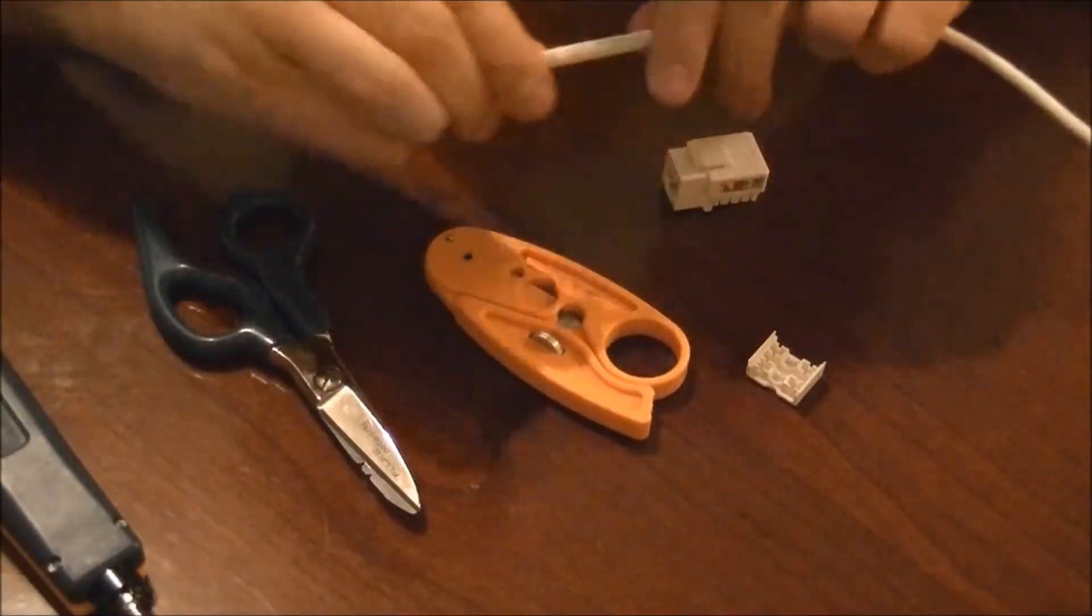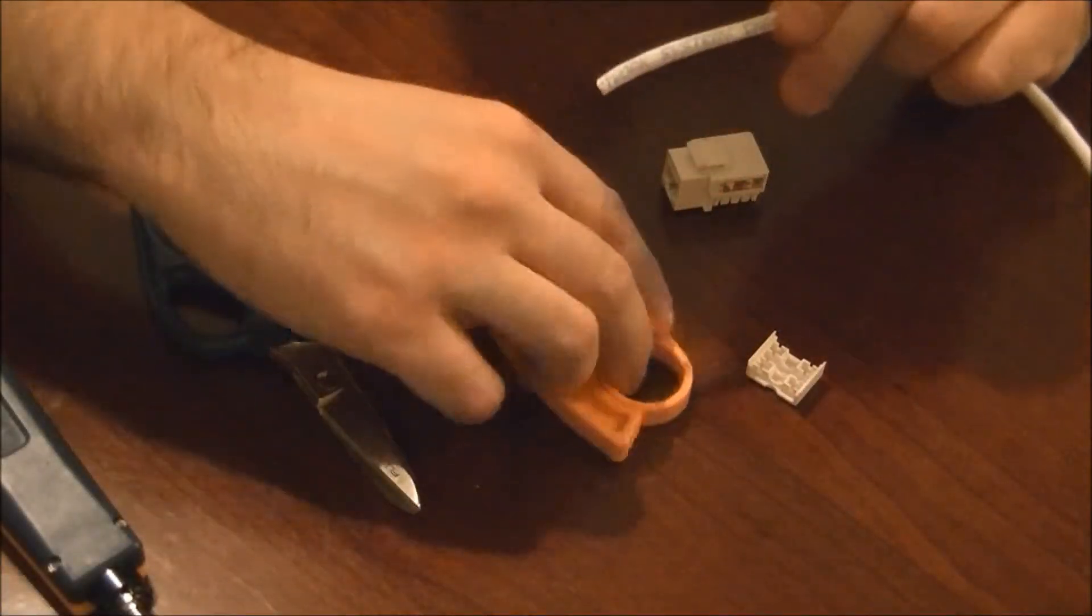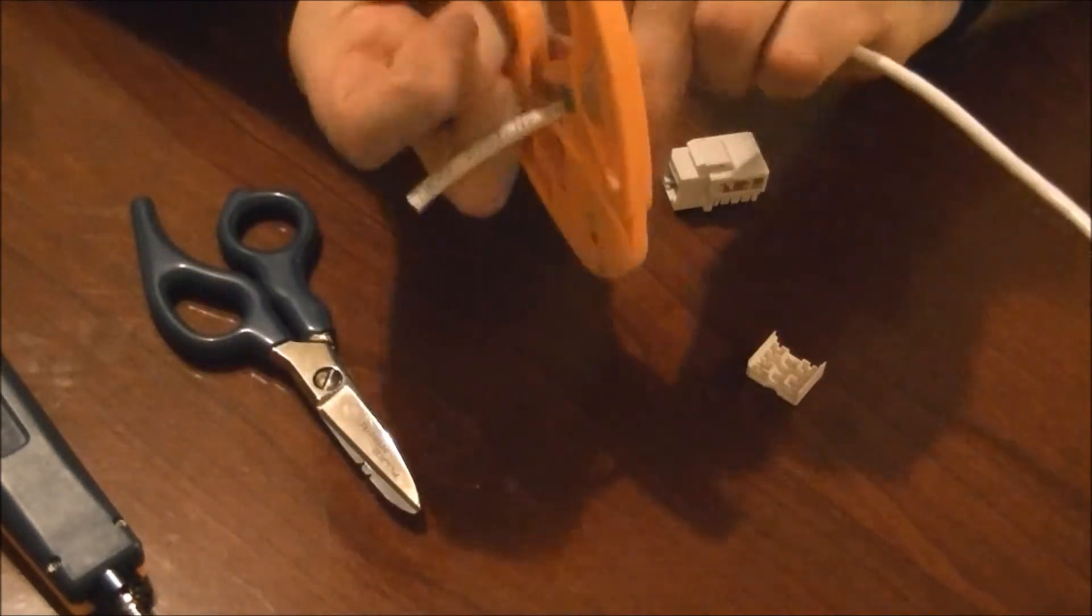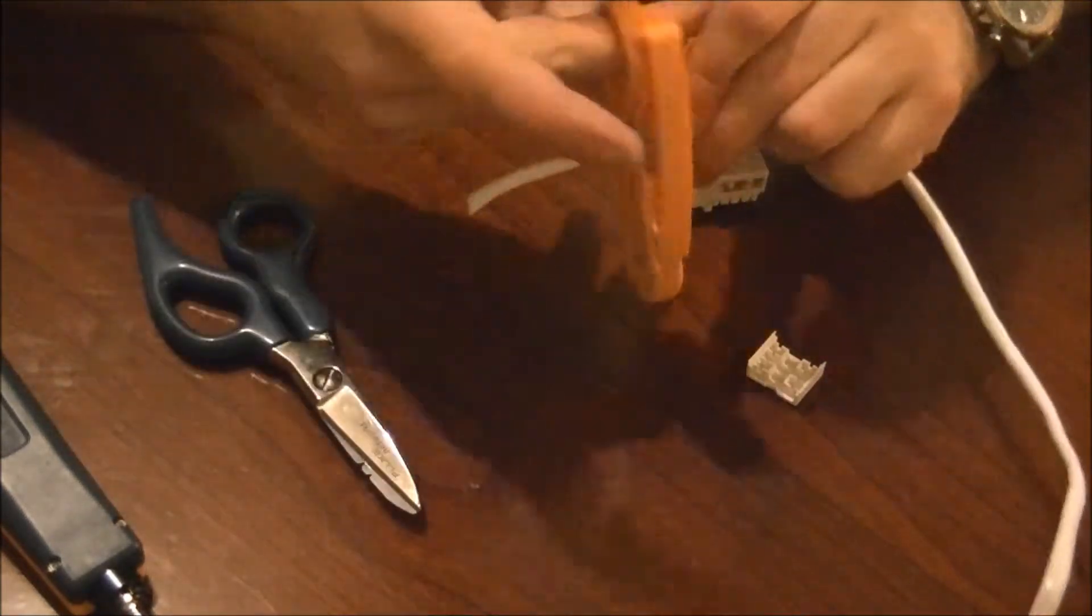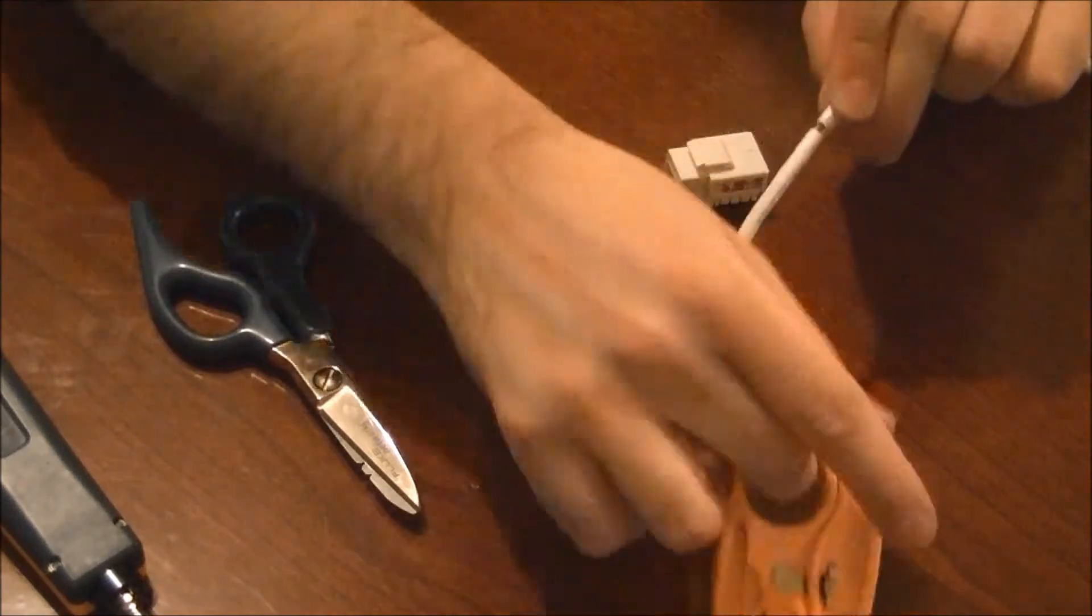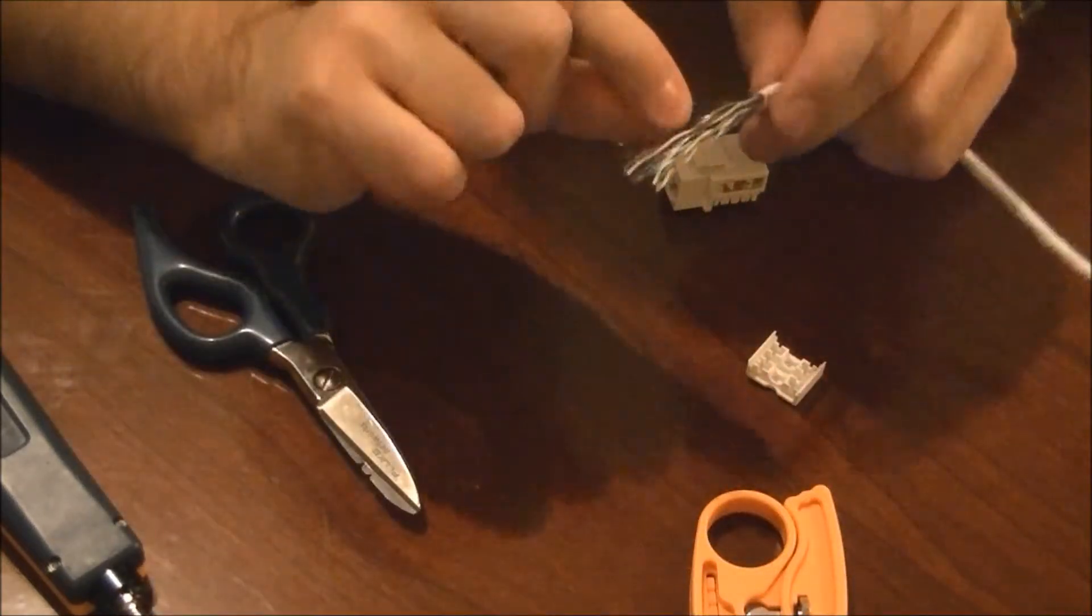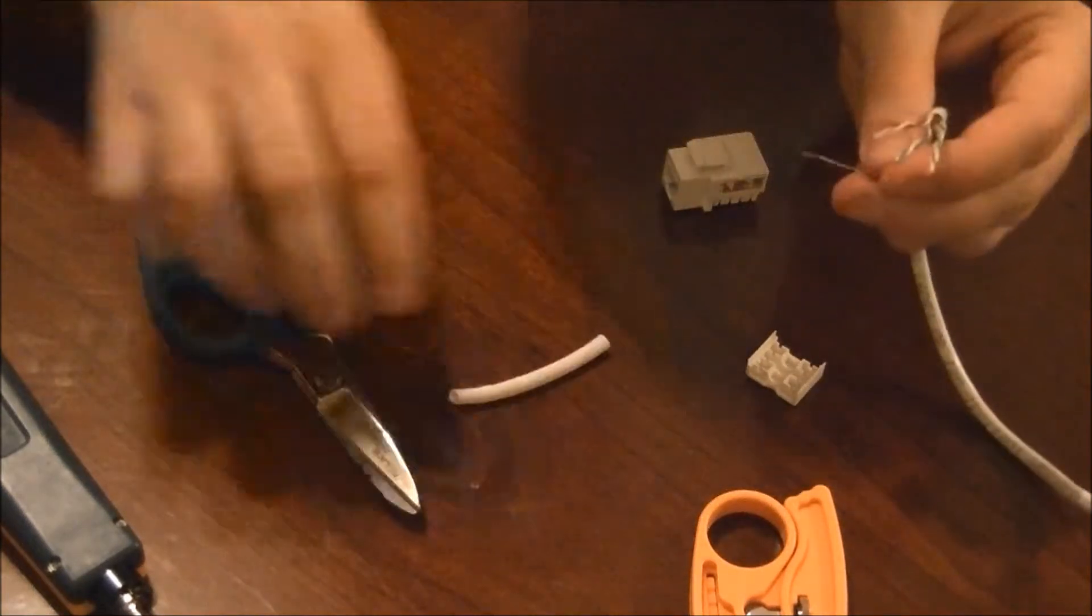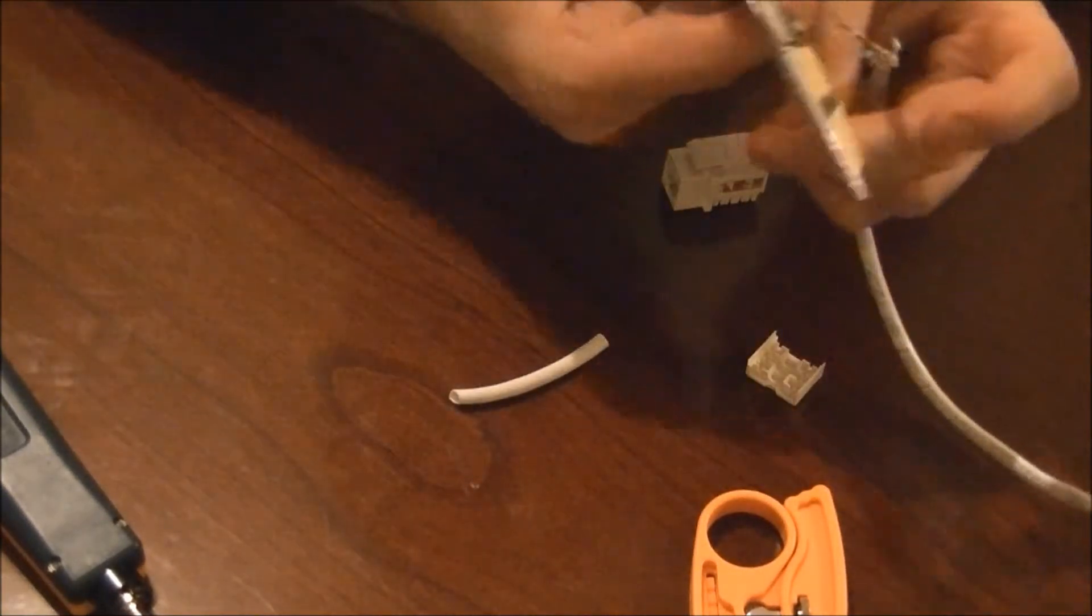First thing you're going to want to do is take your patch cord and cut about an inch and a half of the jacket away, like so. Then you're going to want to remove that piece of fiber. I like to use my scissors, cut it away.